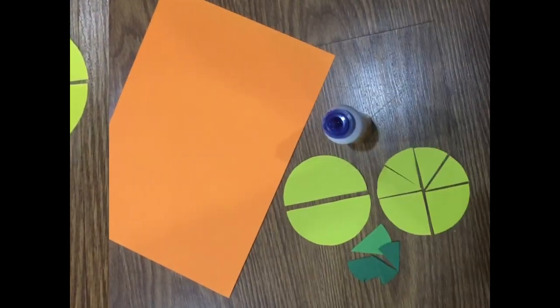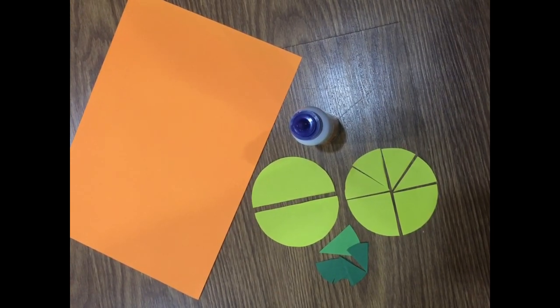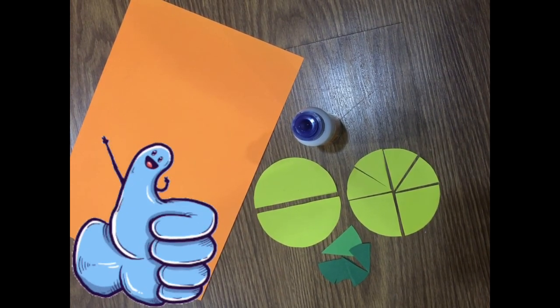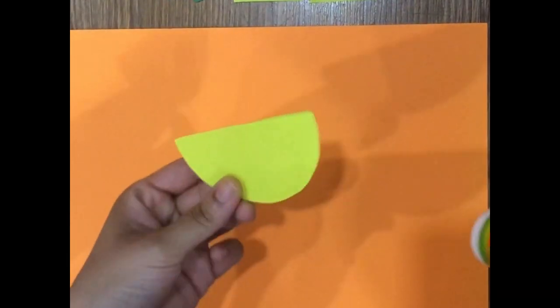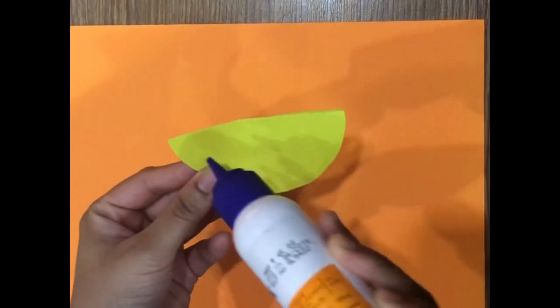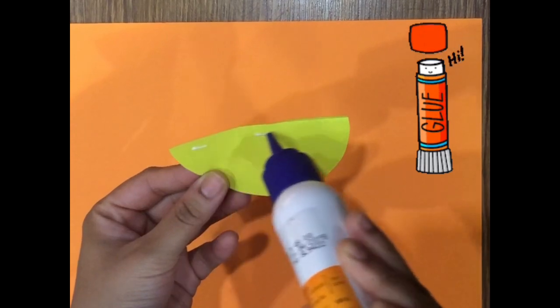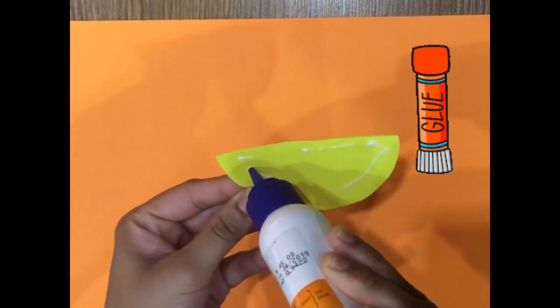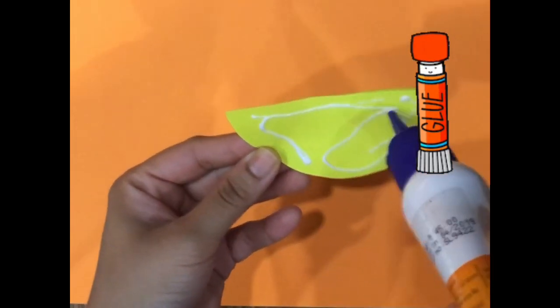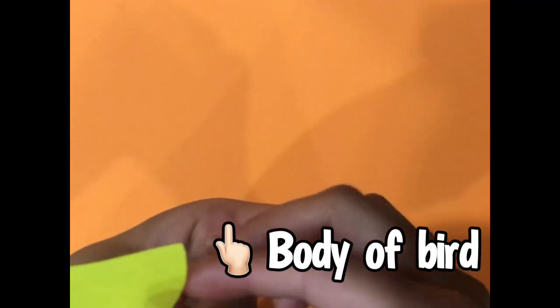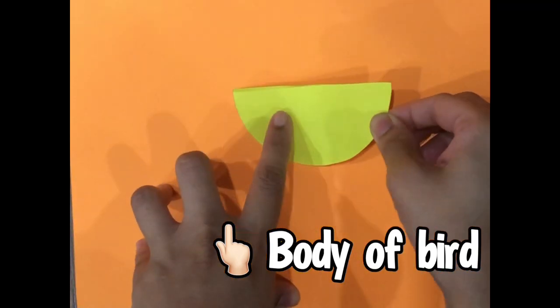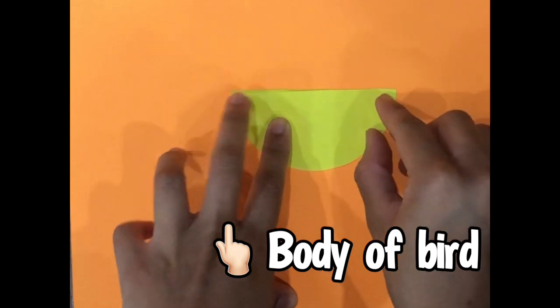Now I have obtained all the necessary paper cuttings to make the fraction bird. Take any other colored sheet of paper of your choice. Use one semicircle, put some glue on one of the sides to form the body of the bird, and paste it in the center of the sheet.